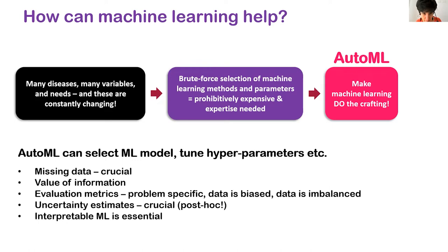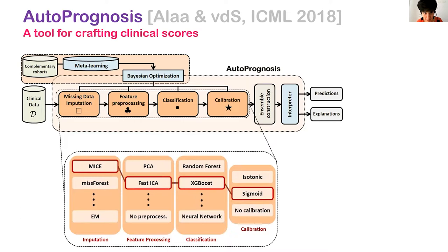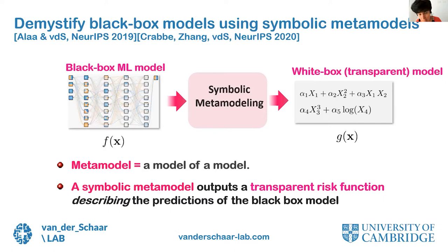AutoPrognosis was built a few years ago as a tool for crafting clinical scores at scale. It uses clinical data and builds entire pipelines for prediction, imputation, feature processing, classification, and calibration. It can also learn from complementary cohorts in other hospitals or healthcare systems, and it issues not only predictions but also explanations through symbolic metamodels. In a previous Revolutionizing Healthcare session, a roundtable with clinicians explored an entire ecosystem of ways to interpret black-box models.